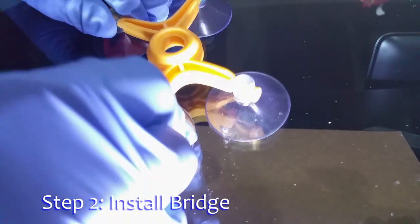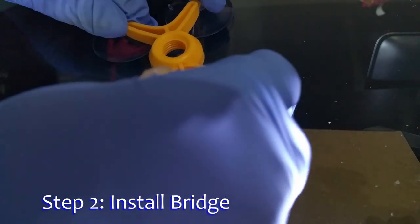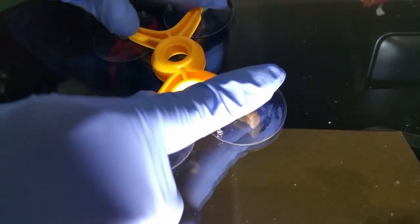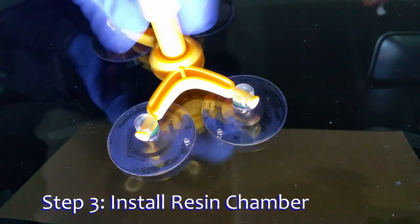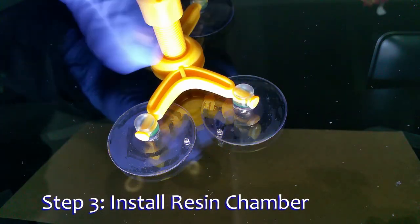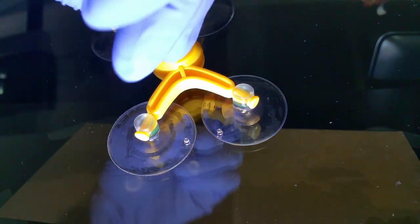Next, install the bridge or base directly over the repair area. Now screw the resin chamber clockwise into the bridge. Make sure to continue until the rubber mouth touches the windshield firmly and forms a good seal.